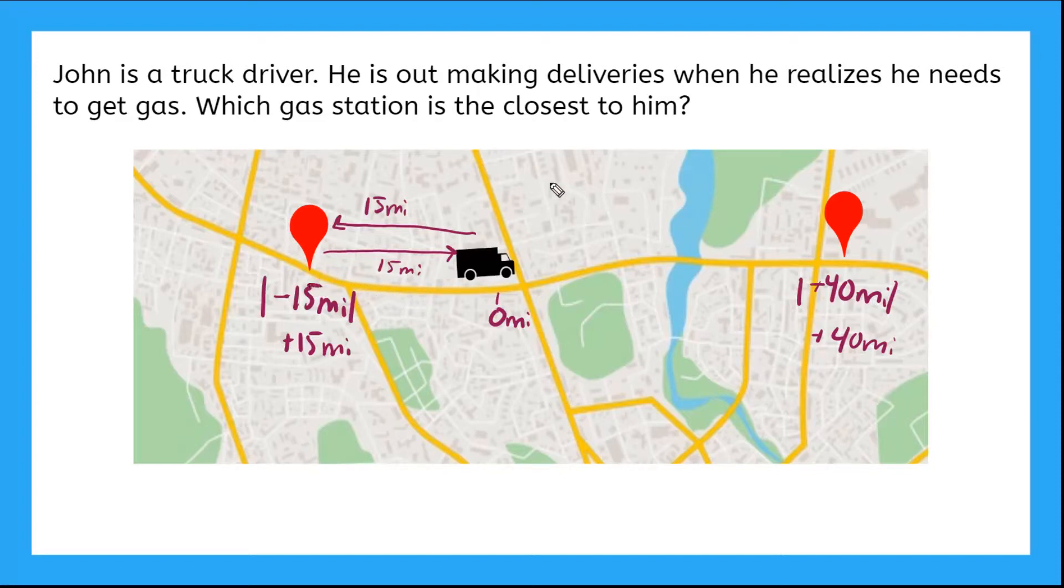So how many total miles will John add to his trip by going back to the gas station behind him? Well, he'll drive 15 miles plus another 15 miles. What's 15 plus 15? That's right, 30 miles. So John will have to travel 30 extra miles to go back to this closer gas station. Nice job using absolute value to solve a real life problem.